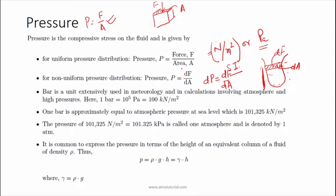If the pressure distribution is uniform, the formula is simply pressure equals force over area. In meteorological calculations we use the unit bar, where 1 bar is equal to 10 to the power of 5 Pascal, and 1 Pascal is equal to 1 Newton per meter square, so 1 bar equals 100 kilo Newton per meter square. 1 bar pressure is approximately equal to atmospheric pressure at sea level.